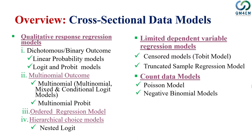We also discussed censored and truncated sample regression models, which fall under limited dependent variable regression models. Finally, we talked about models where the dependent variable is a count variable, for which we use Poisson or negative binomial models. To remind you, that was all an overview — the discussion was more introductory rather than telling you exactly how to apply these models. Interested students are strongly advised to consult the textbook, which has very good examples and data available.